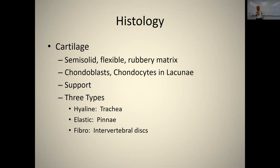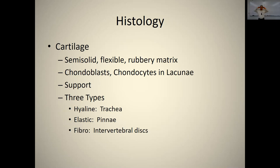Cartilage has a semi-solid, flexible, rubbery matrix. Immature cells are called chondroblasts, mature cells are chondrocytes, and they sit in spaces called lacunae within the tissue. It's mostly for support. The three types are hyaline cartilage — found in the trachea and nose — elastic cartilage — found in the ears — and fibrocartilage — found in the intervertebral discs between the vertebrae.